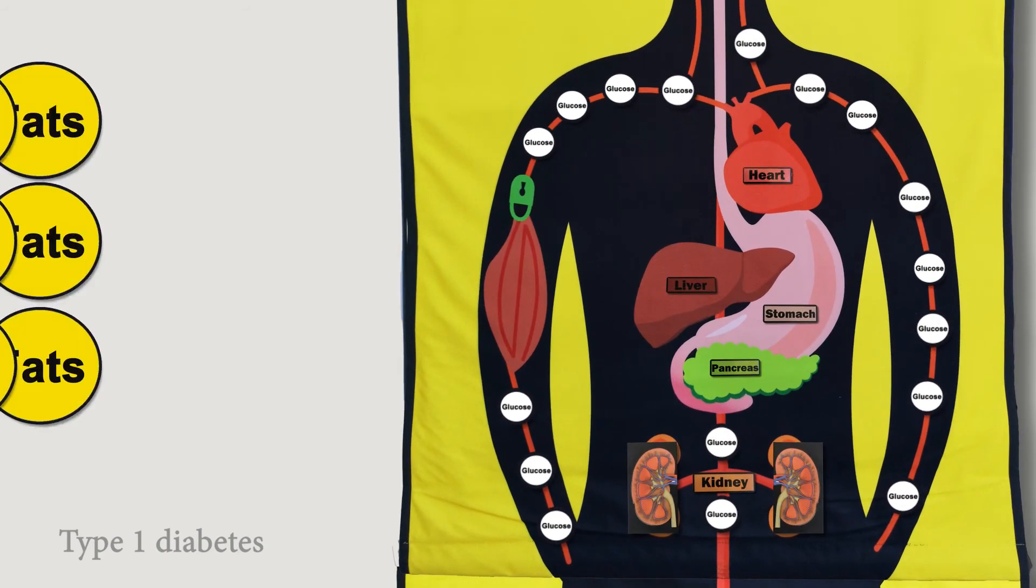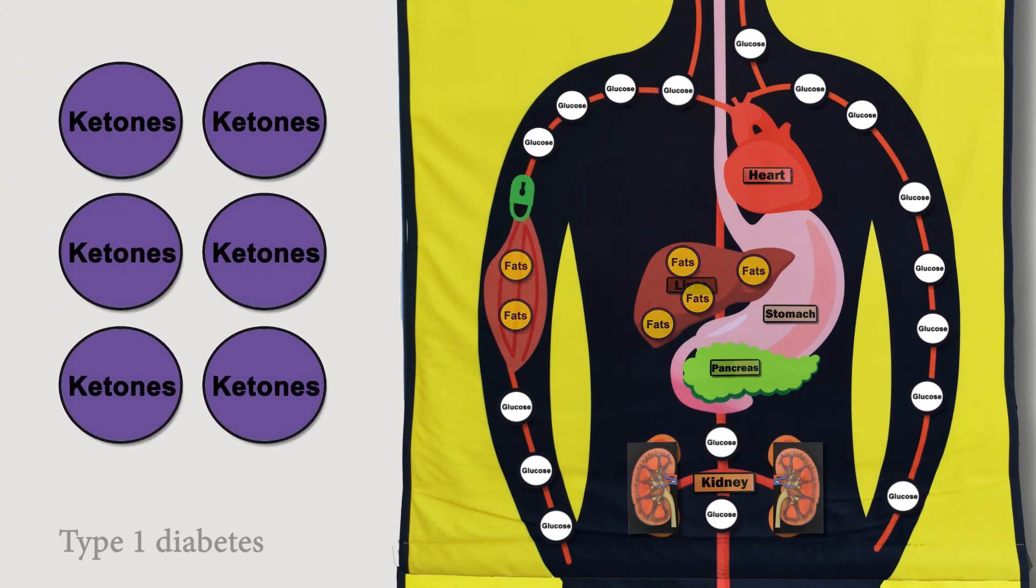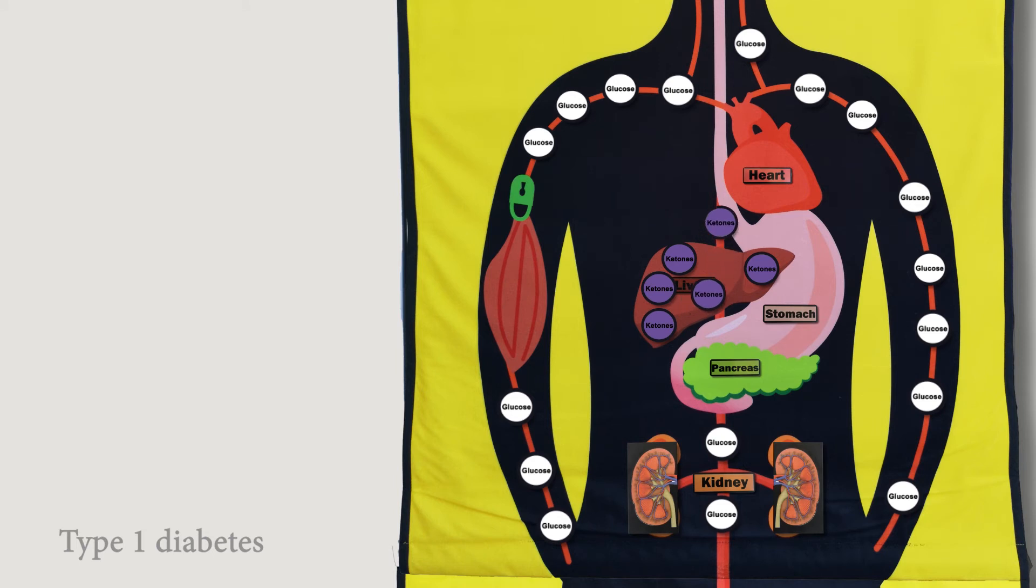The body then looks for another source of energy so it breaks down body fat. When fat is broken down ketones are released into the bloodstream. Without insulin toxic levels of ketones build up and a person with type 1 diabetes can get very sick very quickly.